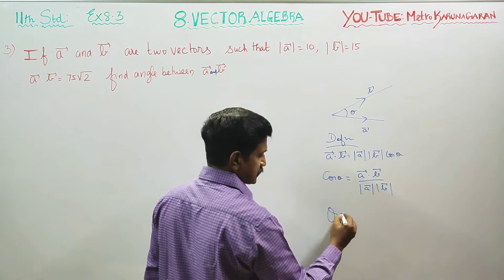Therefore, the angle between A vector and B vector is π/4. This is the answer. Thank you, bye-bye.